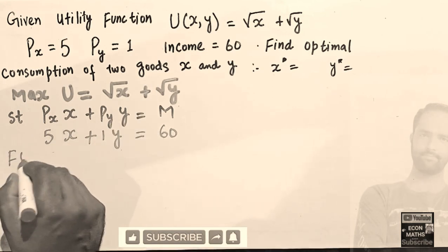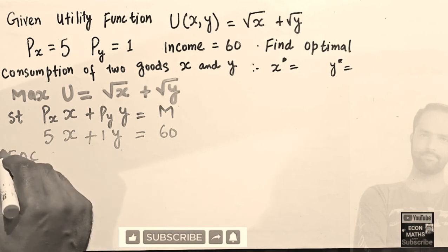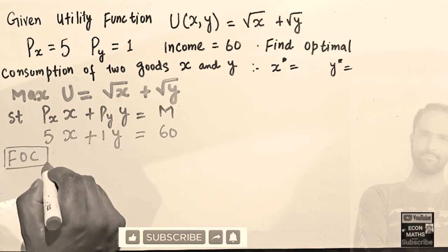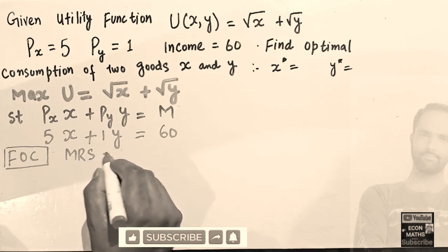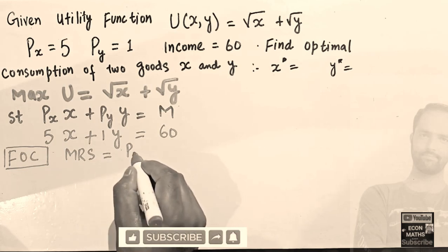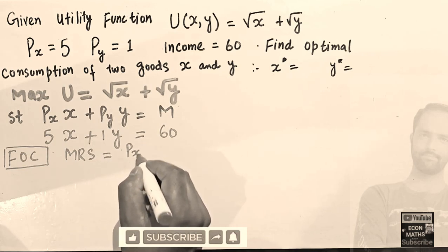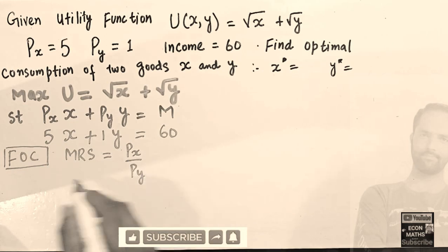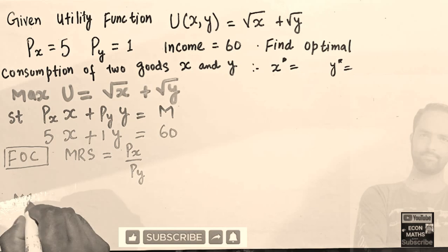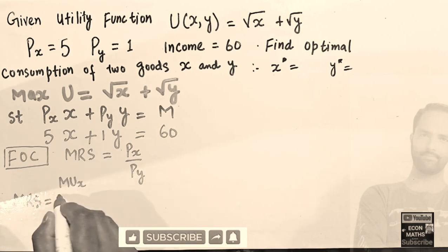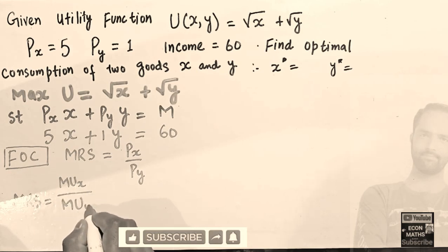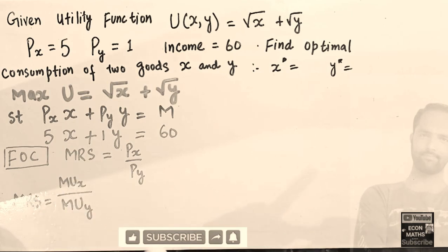The first-order condition for optimization requires that the marginal rate of substitution (MRS) between goods x and y should equal the ratio of their prices — price of x upon price of y. MRS is defined as the marginal utility of good x divided by the marginal utility of good y.